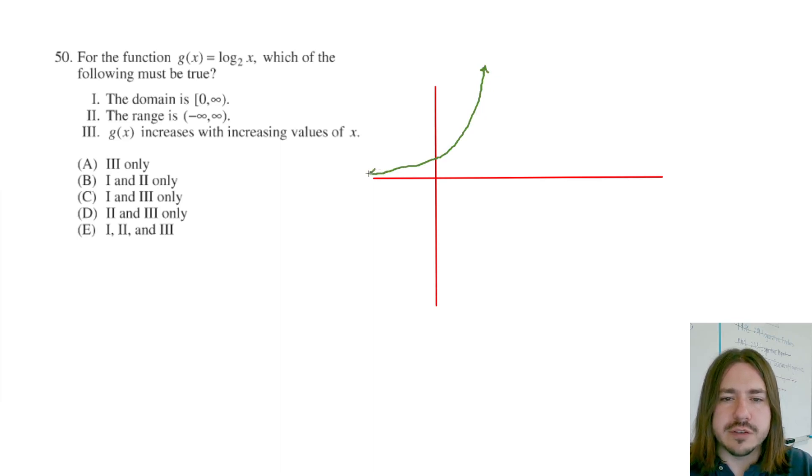It never actually crosses over the x-axis, and it continually goes upwards. So the log function, which is the inverse of this, is going to look something like this, where instead of the asymptote being along the x-axis, it's along the y-axis, and it does something like this.